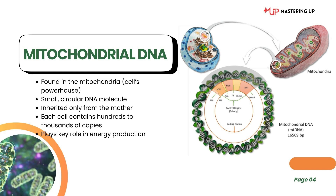One of the most fascinating things about mitochondrial DNA is how it is inherited. Unlike nuclear DNA which comes from both parents, mitochondrial DNA is passed down only from the mother. That's because when an egg is fertilized, the mitochondria in the sperm usually don't survive the process. So all of your mitochondrial DNA comes from your mother, and her mitochondrial DNA comes from her mother, and so on. Another key difference is the number of copies: each cell contains hundreds to even thousands of copies of mtDNA, while it only has two copies of nuclear DNA. This high copy number makes mtDNA very useful in forensic science and ancient DNA studies, especially when samples are degraded or really old.